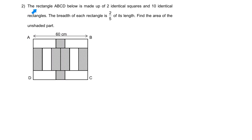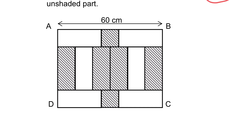Question two: rectangle ABCD is made up of two identical squares and ten identical rectangles. The breadth of each small rectangle is two-fifths of its length — the way to read this is: two units belongs to the breadth, and the length will be five units. We want to find the area of the unshaded part, so let's start to analyze.